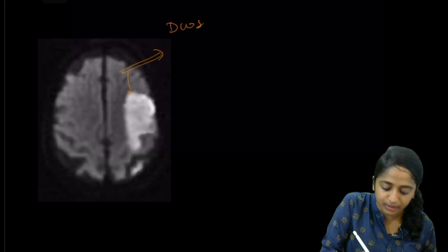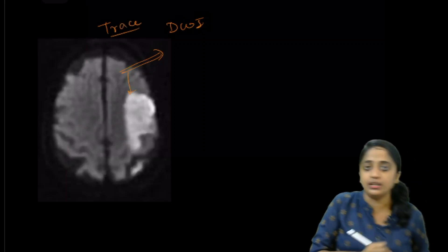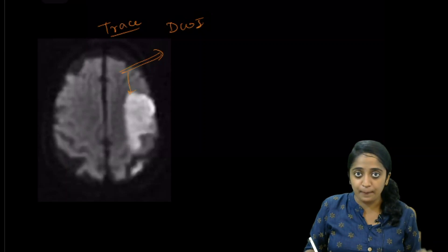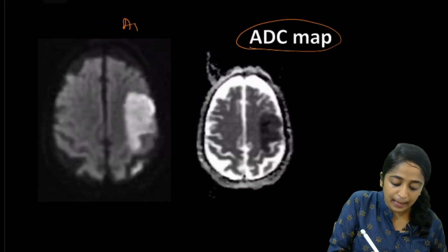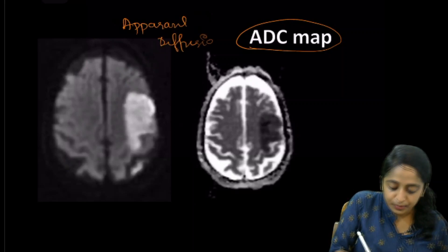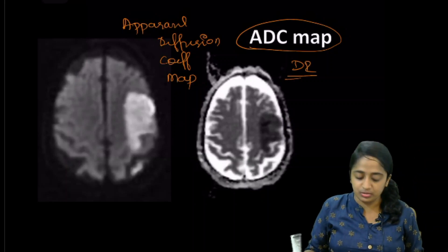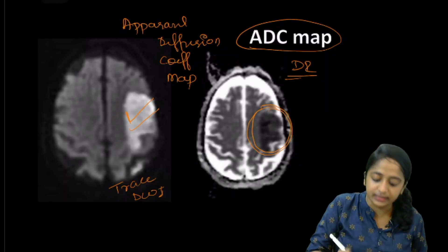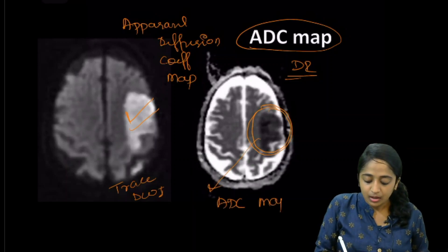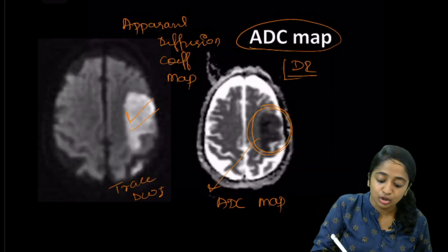Diffusion restriction manifests as a bright signal in diffusion-weighted imaging. But is it enough just to look at the trace diffusion-weighted image alone? No — never interpret diffusion-weighted imaging without also using the ADC map, or apparent diffusion coefficient map. True diffusion restriction will show hyperintense signals on the diffusion-weighted trace image and correspondingly low signal intensity on the ADC map. Only if you get low signal on ADC map along with hyperintensity on the diffusion-weighted image can you call it true diffusion restriction.